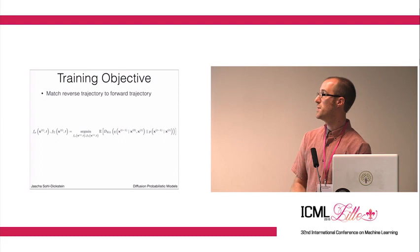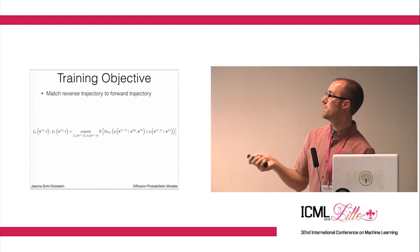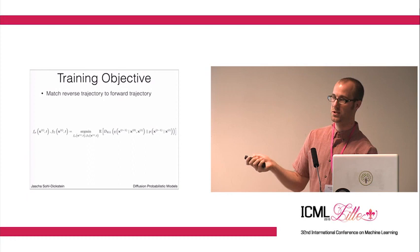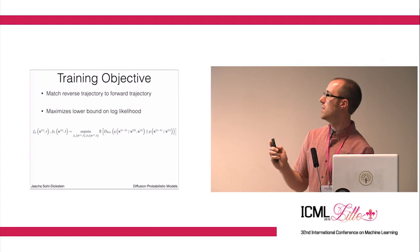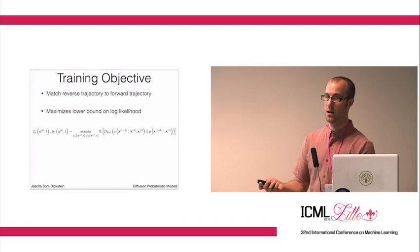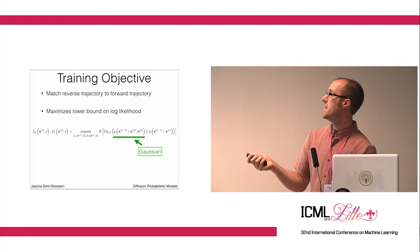...that you end up with is a KL divergence between the posterior distribution over going one time step in the reverse direction and the generative or model distribution for that same step. This objective can be found by maximizing lower bound log likelihood. The derivation is similar to what you see in variational autoencoders, although not identical.